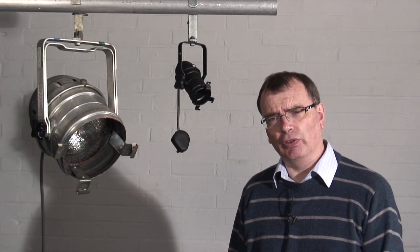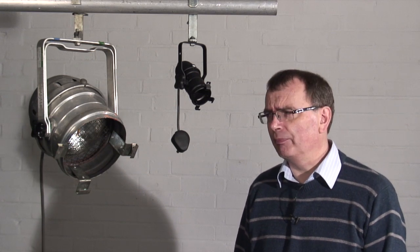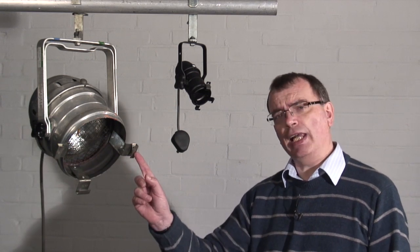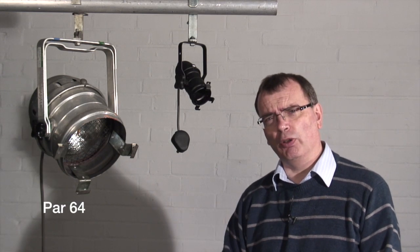This number could be something like 64 or 36 or 16, and what this refers to—it's a very strange American idea apparently—is the width of the front of the can times units of one-eighth of an inch. So for those of you who are good at mathematics, this is a PAR 64: 64 one-eighths of an inch. If you haven't got it already by now, that's eight inches.